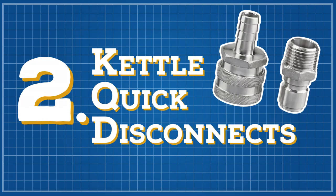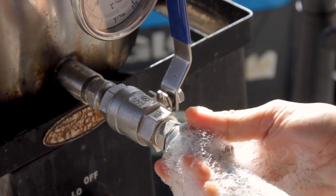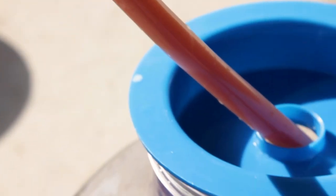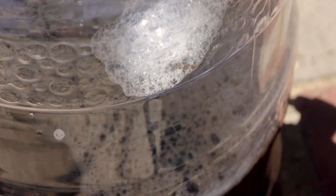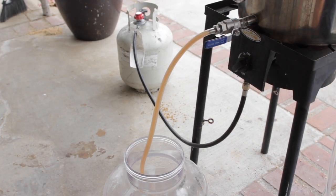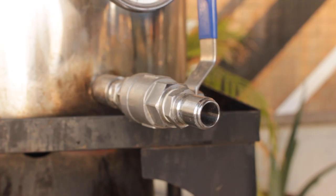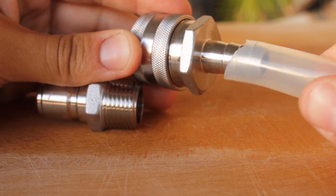Number two, kettle quick disconnects. This one was an early upgrade I made and it's made my brew days so much easier. If you've ever brewed all grain, you know one of the biggest problems with brewing larger batches is moving large amounts of liquid around. Having to connect tubing and disconnect tubing and moving things around can be really annoying. So when I discovered these quick disconnects I was sold. One end connects to a port on your kettle or mash tun and the other connects to the tubing of choice.